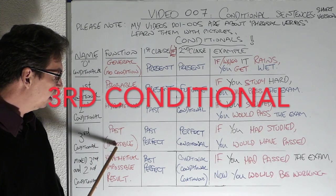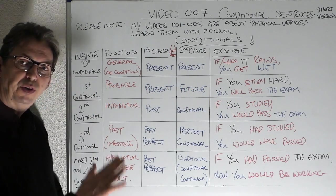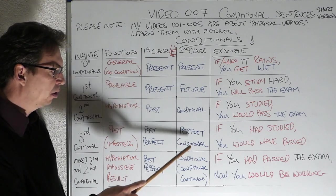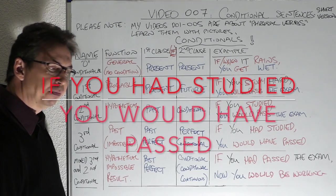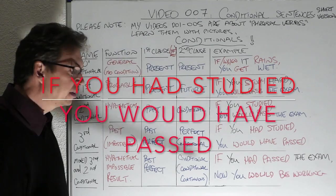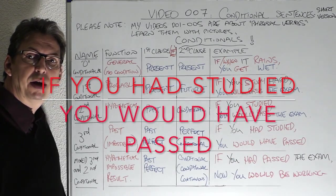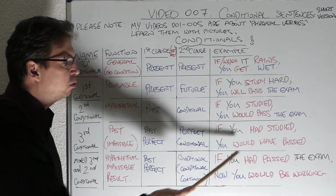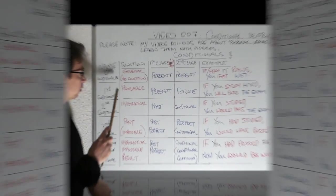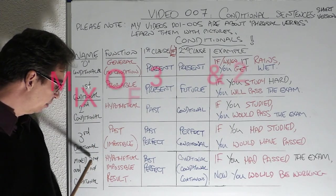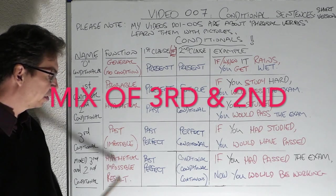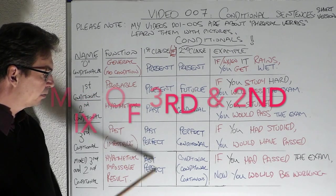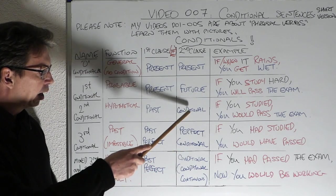The third conditional is past impossible. It's past — it's impossible because it's finished, it happened in the past. We use the past perfect with the perfect conditional. The if clause is the past perfect; the result is the perfect conditional. If you had studied — the person didn't study — if you had studied you would have passed the exam. If you had gone to London you would have seen Buckingham Palace, for example.